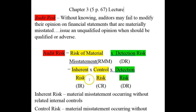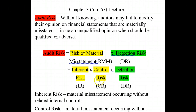Control risk is material misstatement occurring without the controls in place. Control risk means if the controls that you put in place are not functioning as they should be, then you have a risk. When you multiply the inherent risk in an asset by the control risk, that gives you the risk of material misstatement. Some asset types have higher risks of material misstatement than others.